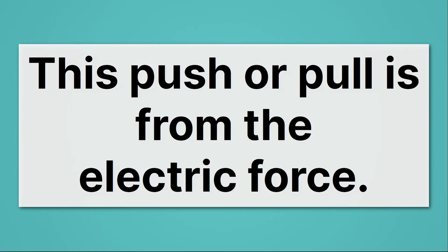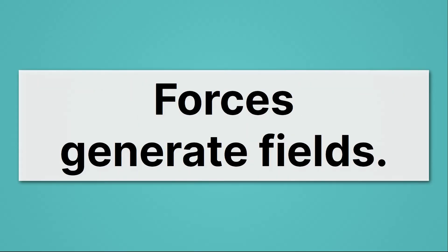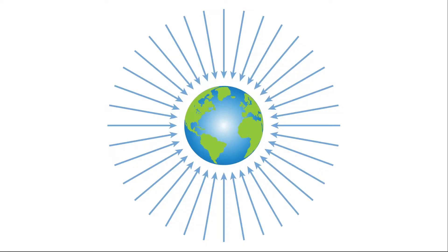This push or pull is from the electric force. And remember that forces generate fields. For example, the gravitational force generates gravitational fields. Here, all these arrows point to the earth, and they're telling you the direction mass would go if we placed it around the earth. It's always going to go towards the earth.